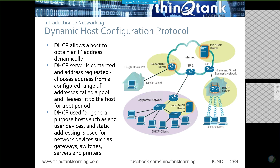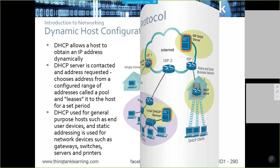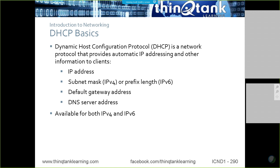DHCP is broadcast-based and it's going to assign things like an IP address, a subnet mask, a default gateway, DNS server address information, TFTP information, specific option information, and so on. There are lots of things that DHCP will provide to devices that are requesting DHCP information.